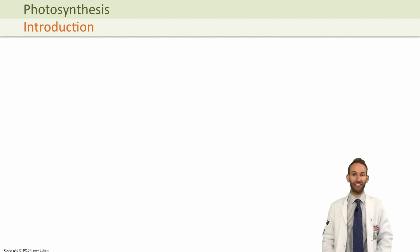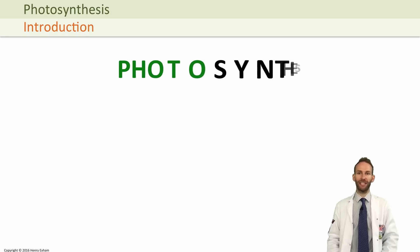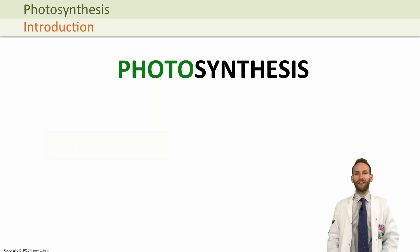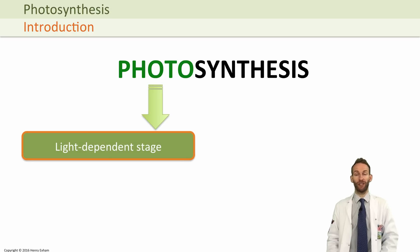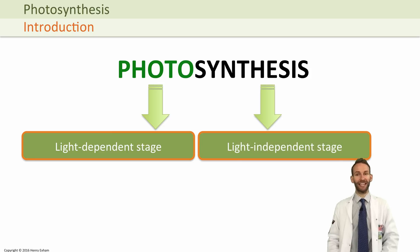Photosynthesis is actually a two-stage process. The clue is in the word: 'photo' meaning light and 'synthesis' meaning make. The first part is called the light-dependent stage, and the second part is called the light-independent stage.